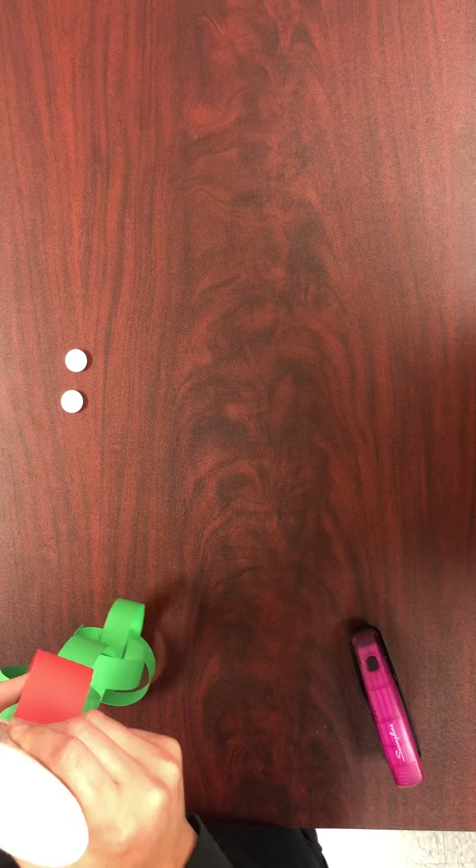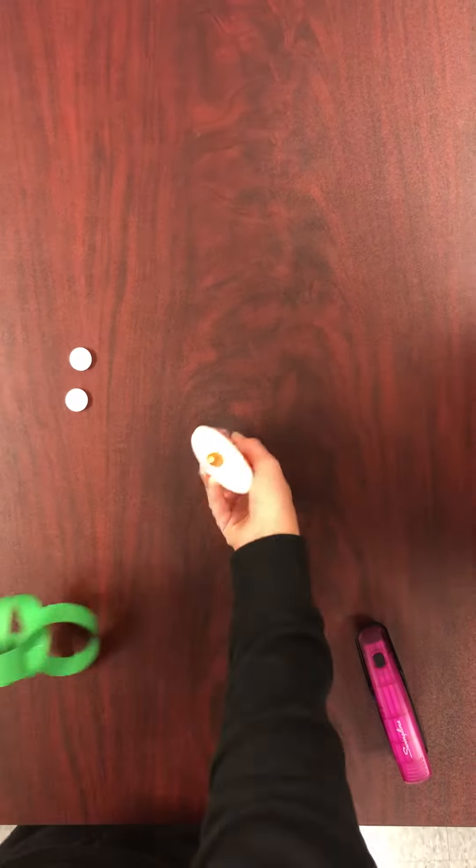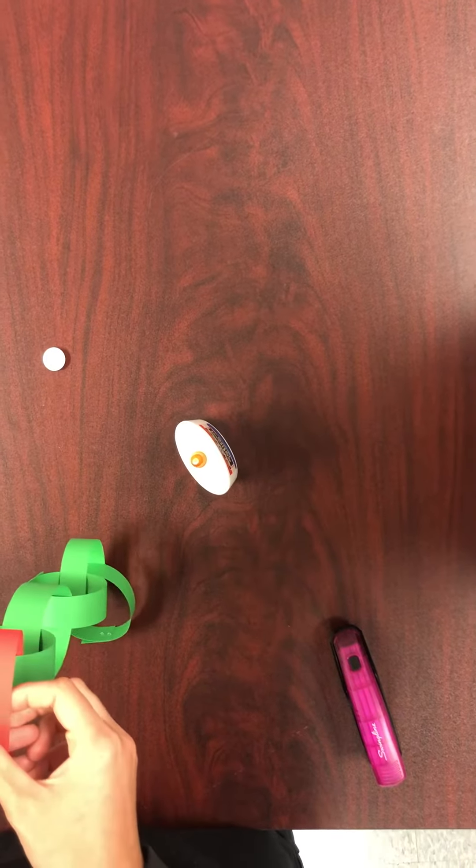Next, take glue and put two dots on the red, then stick down your eyes.